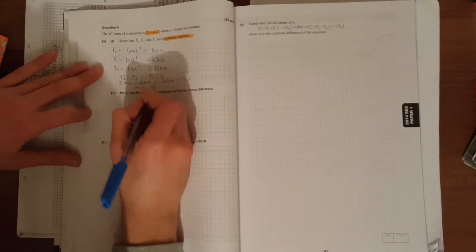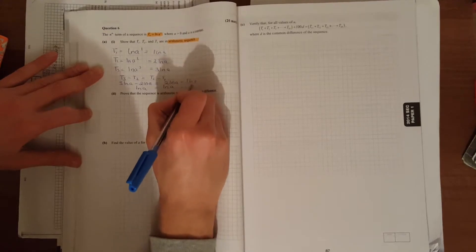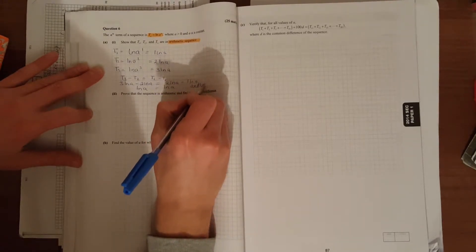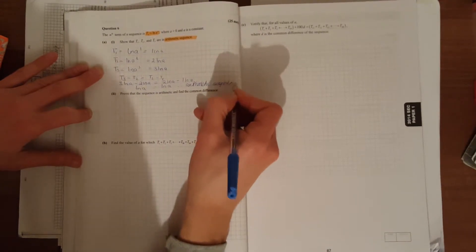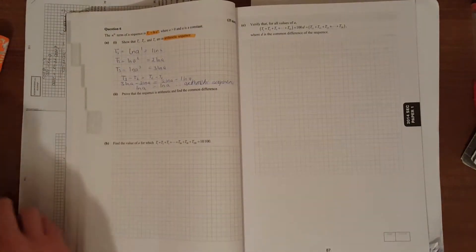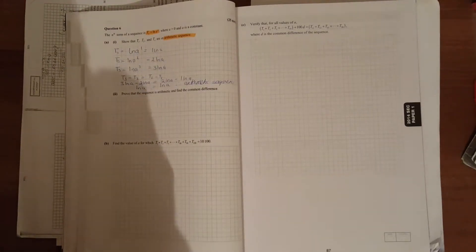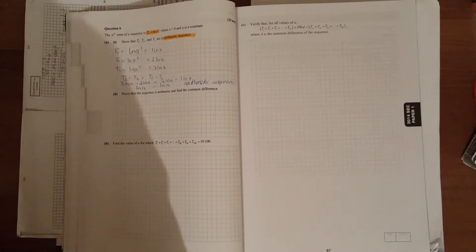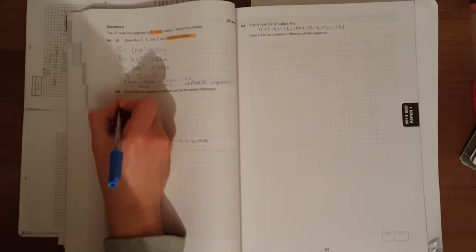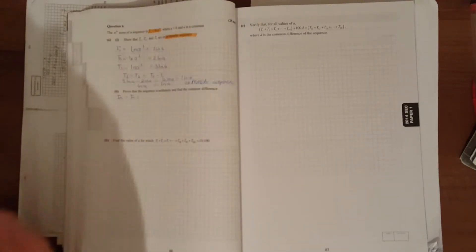3·ln(a) minus 2·ln(a) is 1·ln(a), and it's the same over here. Therefore, it's arithmetic sequence with the same first difference. To prove that all terms, not just the first three, are arithmetic, we'll do it in general.